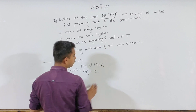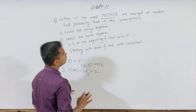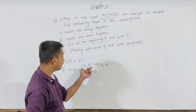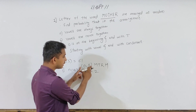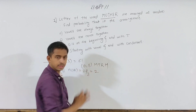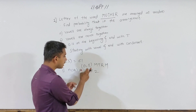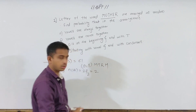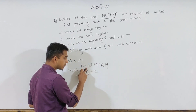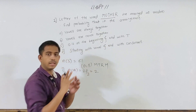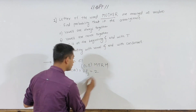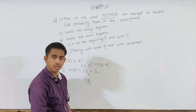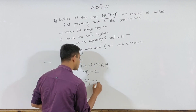We have M, T, R, H — that's 1, 2, 3, 4 letters — plus the vowel unit, giving 5 units total: 1, 2, 3, 4, 5. So the arrangement is 5P5, which is the combination of 5 positions. The vowels OE are always together, so this gives us 5P5.